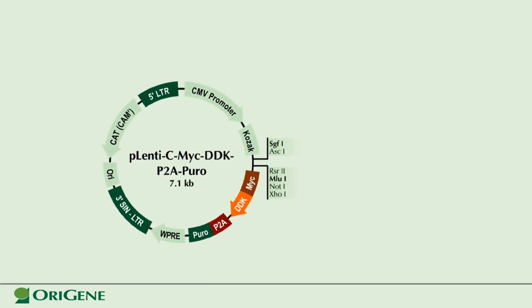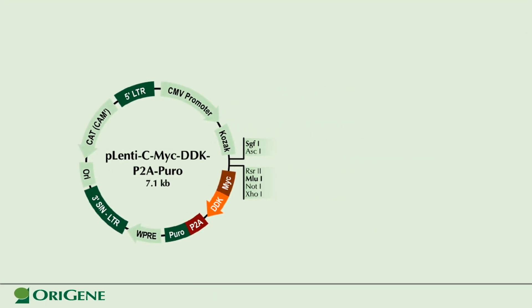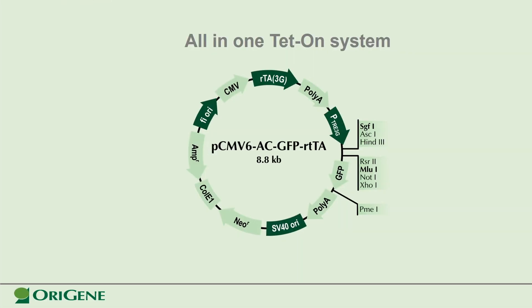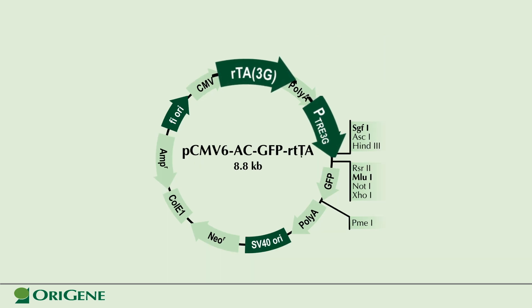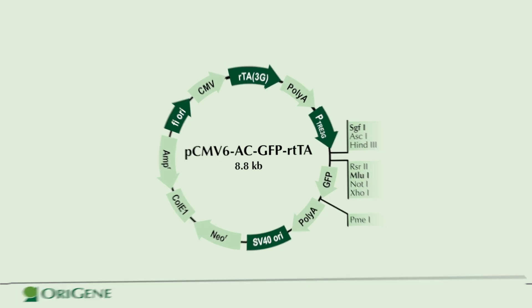One challenge of these vectors is the leakiness or background expression in the off-state. OriGene has developed an all-in-one TETON system — a new and improved version of the original TETON systems. The transactivator is present in the same vector, eliminating the need for another plasmid and making the process time efficient. It is tight and tunable.